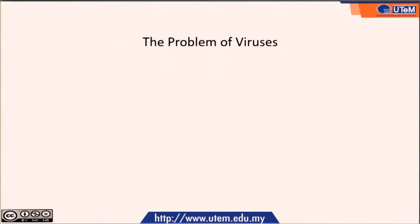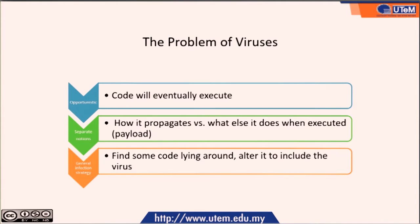What is the problem of viruses? Viruses can be opportunistic, and they can execute with a separate notion. There are two aspects: how it propagates versus what else it does when executed — its payload — which can harm the target. And finally, the general infection strategy, which involves finding code lying around and altering it to include the virus.